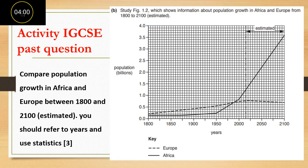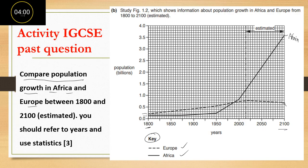Here is a sample IGCSE question where they ask us to compare the population growth in Africa and Europe. Looking at the key, you identify which line is Africa and which is Europe. This straight line represents Africa, while this line here represents Europe. You should note that in 1800, Europe's population is higher than Africa's, but by 2100, Africa's population is higher than Europe's. That comparison gives you two marks. For one more mark, they say you should use statistics in your answer — stating actual values to support your description or claim.